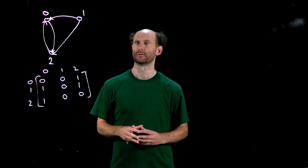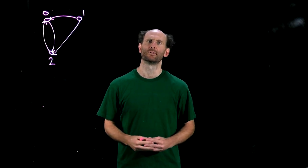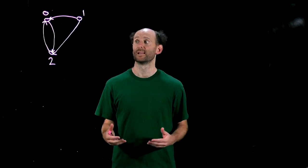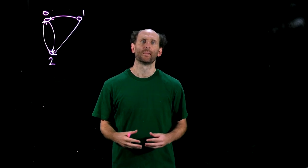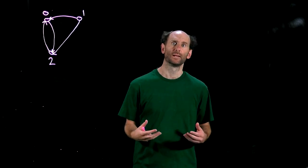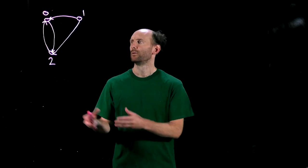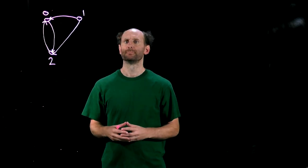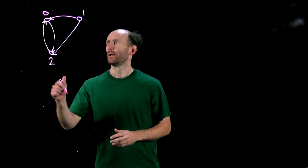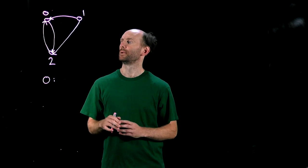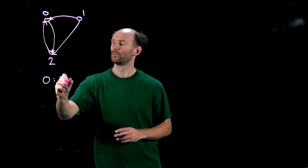The second representation is an adjacency list representation, which is a list of n lists, one for each node, where the i'th list simply lists all of the out neighbours of node i. So to return to our example, the adjacency list representation has the 0th list simply listing the out neighbours of node 0, that's node 2.